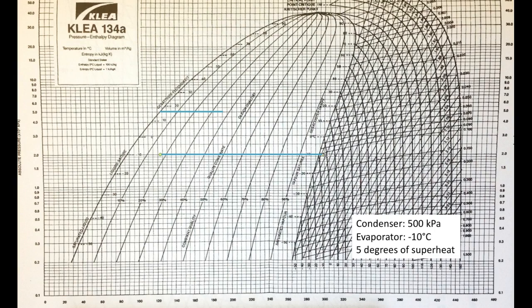But where does the evaporator start? Looking at our condenser line, it stops at the saturated liquid line, and that's where the expansion valve starts. The expansion valve only drops the pressure — it has constant enthalpy, so it drops straight down. Dropping straight down from the condenser line to the evaporator line, the evaporator must start where that vertical line intersects the minus 10°C line. So the evaporator starts at the end of the expansion valve — there's nowhere else for it to start.